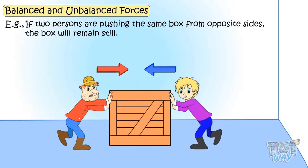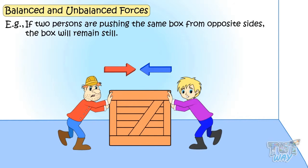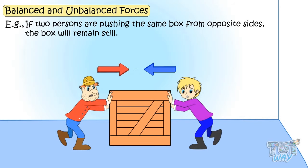If there is an object and two persons are pushing it from opposite sides, the object will stay still or will not move if the force acting on both sides is the same. That is, balanced forces are acting on it.